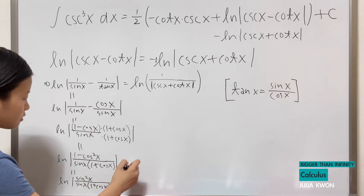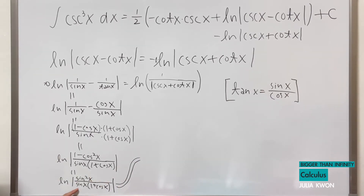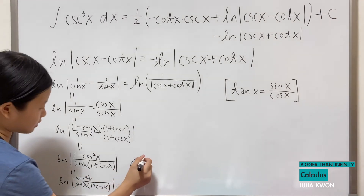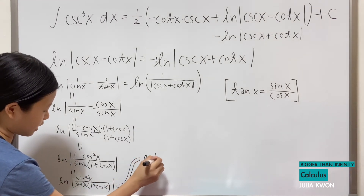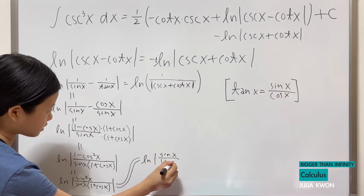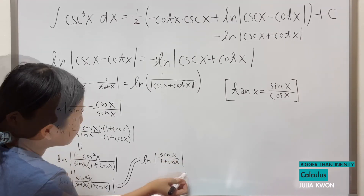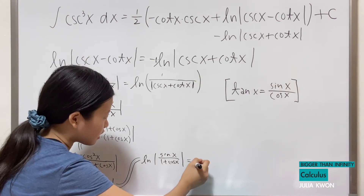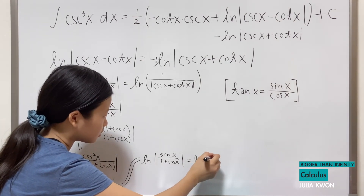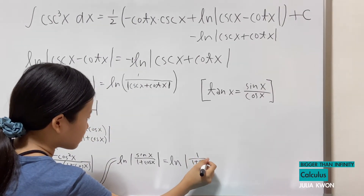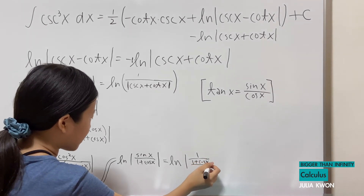We can cancel one sine x from the numerator with the sine x in the denominator, leaving us with ln of the absolute value of sine x divided by 1 plus cosine x. We can rewrite this as ln of the absolute value of 1 divided by the quantity 1 plus cosine x, all divided by sine x.